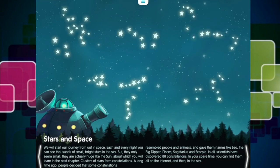We will start our journey from out in space. Each and every night, you can see thousands of small, bright stars in the sky. But they only seem small. They are actually huge, like the sun, about which you'll learn in the next chapter.